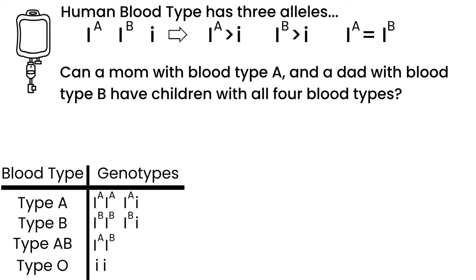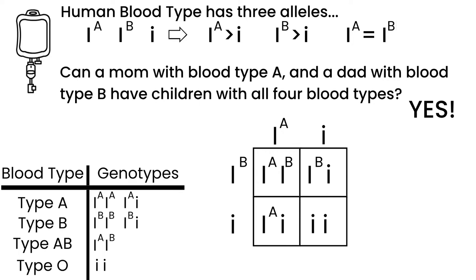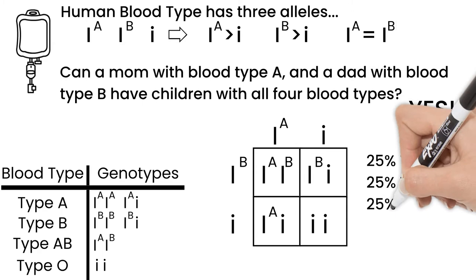Yes, it's possible if the mom's genotype is capital I A and lowercase i, and the dad is capital I B and lowercase i. There is a 25% chance of each A, B, AB, and O blood types.